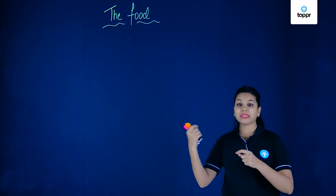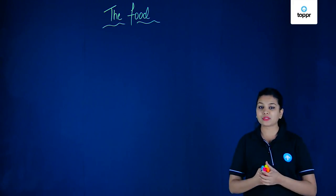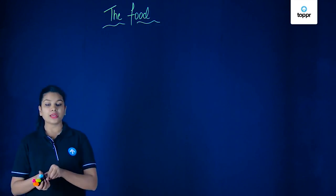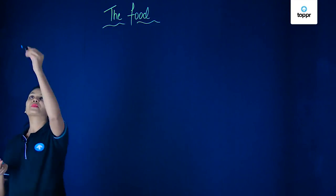Now the question arises: what does this food contain? What are those magical ingredients in this food which give you energy? Well, we say that the basic units of food that we get from eating different kinds of food items are called nutrients. So food gives us nutrition, and the basic things which are present in this food are what you will call nutrients.